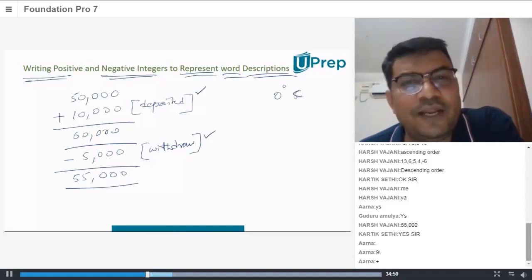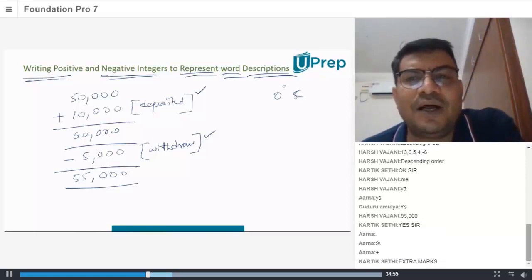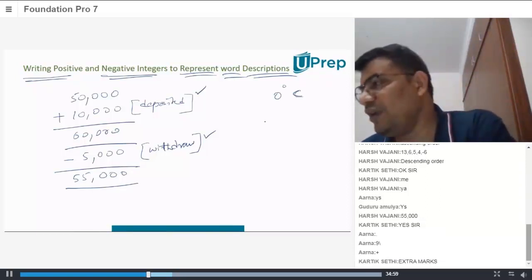Very good Priscilla, but let me explain it a little better. Say, let's assume in summer, your temperature, temperatures go up to 40 degrees. So, we will say that as plus 40 degrees centigrade.